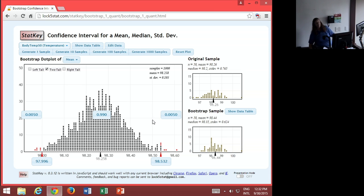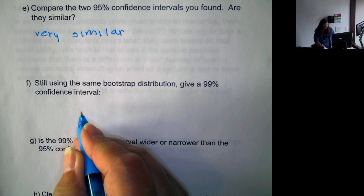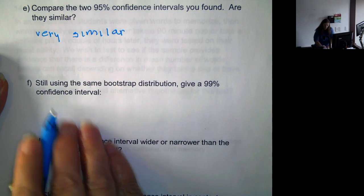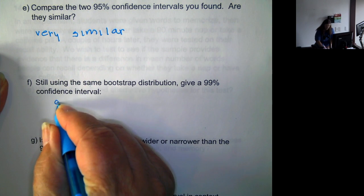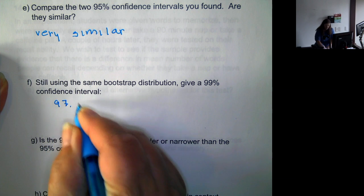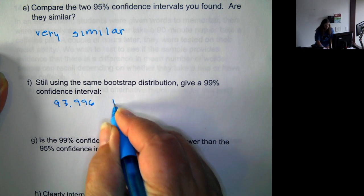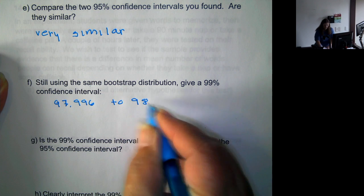And if you think of the interpretation, we want to be 99% confident that the true population mean falls within this interval. So it's going to be a wider interval. So the 99% interval turns out to be 97.996 to 98.532.